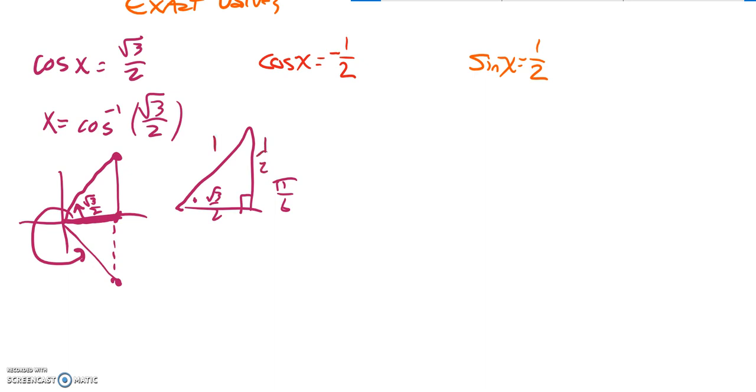So that means that this value right here, this angle is pi over 6. And if I want this angle, this little part right here is a pi over 6 rotation. So I can go 2 pi minus pi over 6. So 2 pi is 12 pi over 6 minus 1 pi over 6, and that is 11 pi over 6.